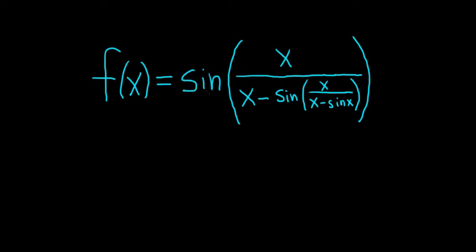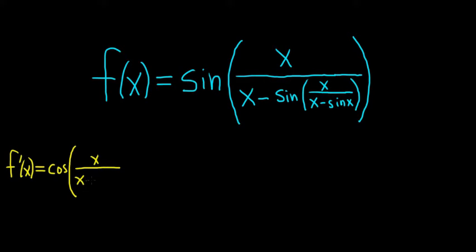The derivative of sine is cosine, so we'll start by writing cosine of all of this stuff, and then we're going to multiply by the derivative of the inside. So f prime of x is equal to cosine of all of that stuff there — so we have x over x minus the sine of x over x minus the sine.